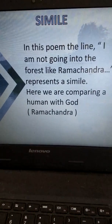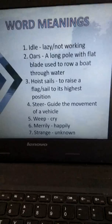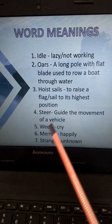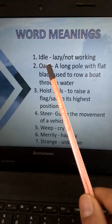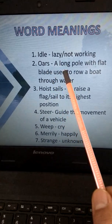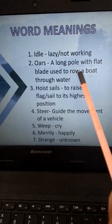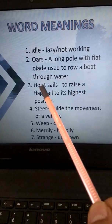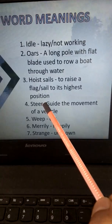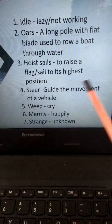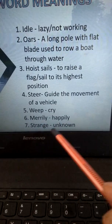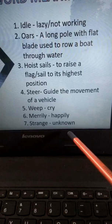Now we come to the last part of this poem — word meanings. Here are a few words and their meanings. Idle means lazy or not working. Oars — a long pole with a flat blade used to row a boat through water. Hoist sails — to raise a flag or sail to its highest position. Steer — guide the movement of a vehicle. Weep — cry. Merrily — happily. Strange — unknown.